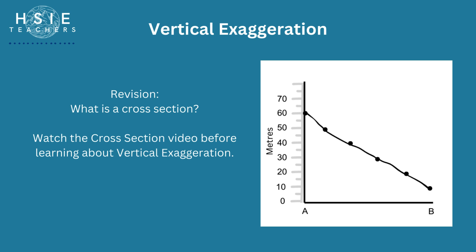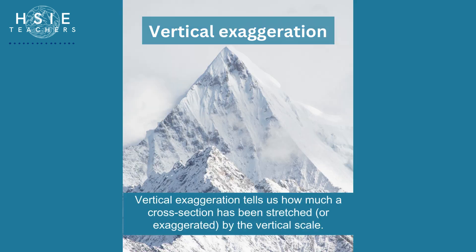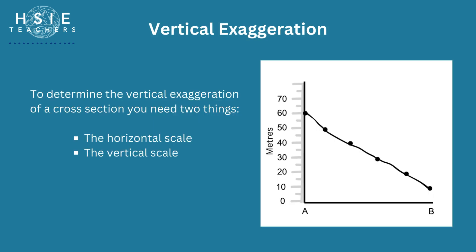Remember that a cross-section is a diagram you can draw to show the shape of the land by plotting points on a graph. Vertical exaggeration tells us how much a cross-section has been stretched or exaggerated by the vertical scale. To determine the vertical exaggeration of a cross-section, you need two things: the horizontal scale and the vertical scale.